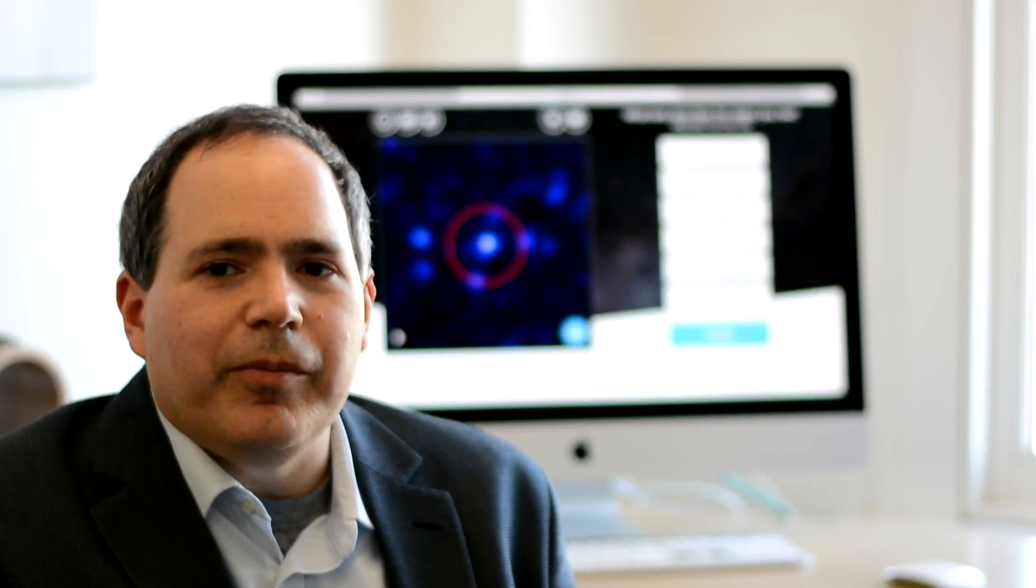What we're looking for are clean, bright points of light with nothing else around them. In particular, if you see other objects inside the red circle on the screen, that's a problem.